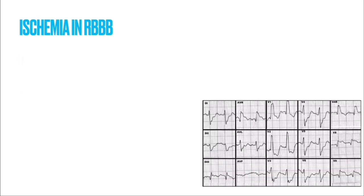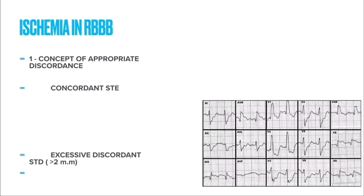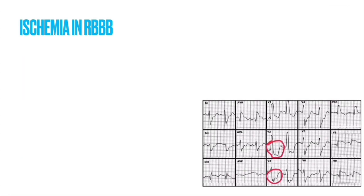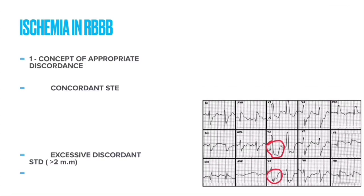The second finding indicating ischemia is excessive discordant ST depression of more than 2 mm. In this ECG we can see excessive ST depression in V2 and V3 — this level of ST depression we will not get in normal right bundle branch block, so it again indicates ischemia.